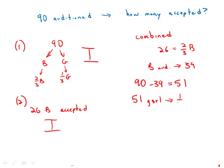And of those girls, a third of them were accepted. So then we'd know, we could figure out from that the number of girls accepted. We could add that to 26, which is the number of boys accepted, and we would be able to figure out the number of students who were accepted.